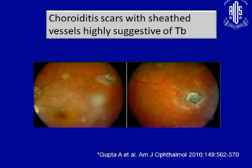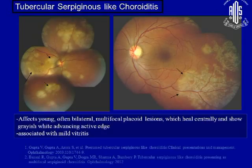When you see vasculitis and choroiditis lesions together, this is highly suggestive of TB as the etiology. These are triggered by a TB infection but are largely an immune response. This is multifocal serpiginoid choroiditis, very common in our country and the South Asian population. You can see active edges, and if you do not recognize this entity you risk making the patient blind.